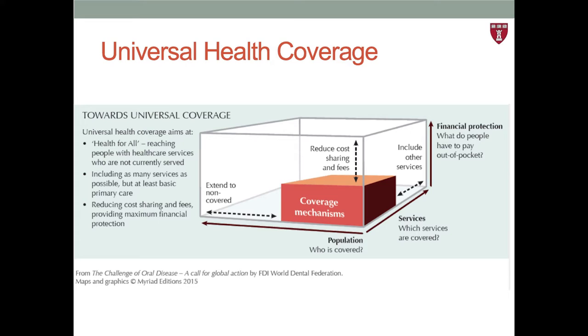Universal coverage consists of three main pillars: who's covered — the percentage of the population covered; which services are covered — the percentage of services or treatments covered by prepaid costs; and what do people pay out of pocket — the percentage of costs that are covered and the percentage that people will be responsible for paying. The overall aim of universal coverage is to reach as many people as possible with essential health services, particularly people who otherwise do not have access, to include coverage for as many services as possible, and to cover as much of those services as possible, overall reducing out-of-pocket spending on healthcare, specifically for those who can least afford it.